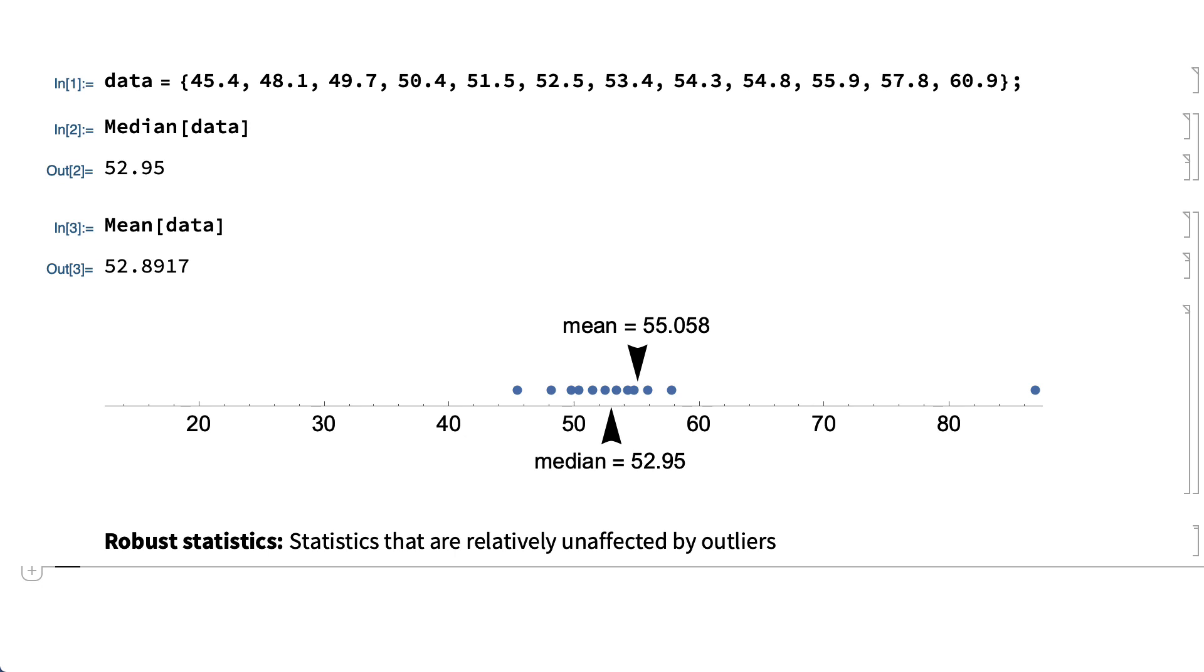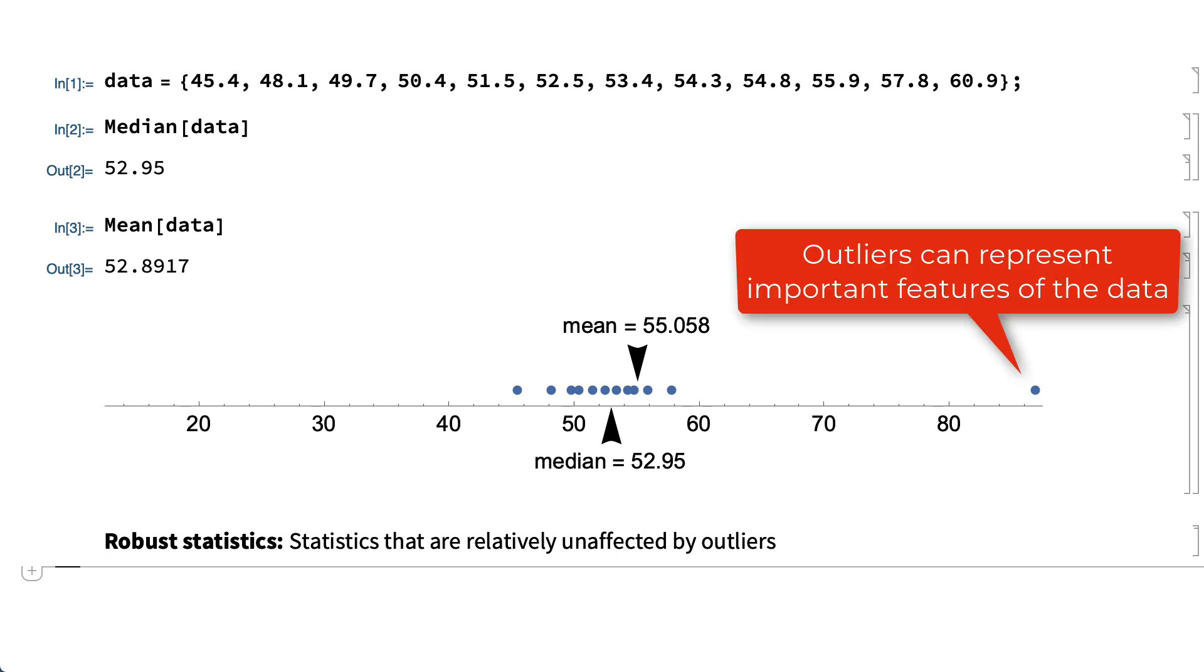Some outliers can be ignored, for example, such as outliers that result from data collection errors or from effects that are otherwise not of interest. But outliers can also represent important features of the data, like earthquakes or genetic mutations or other unusual phenomena or events. So appropriate choices about robust statistics and the handling of outliers depend on the nature of the outliers and on the application.